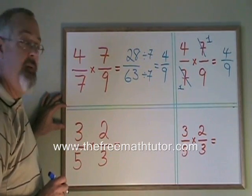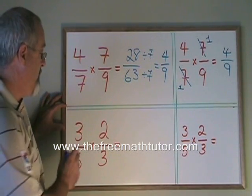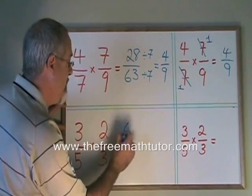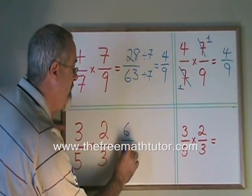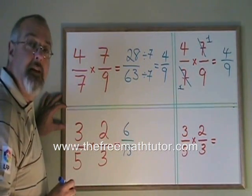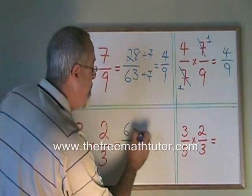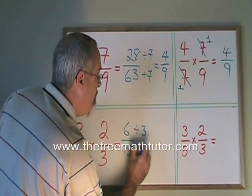Let's try this one. 3 fifths times 2 thirds. 3 times 2 is 6, 5 times 3 is 15. But 6 and 15 have a common factor of 3.